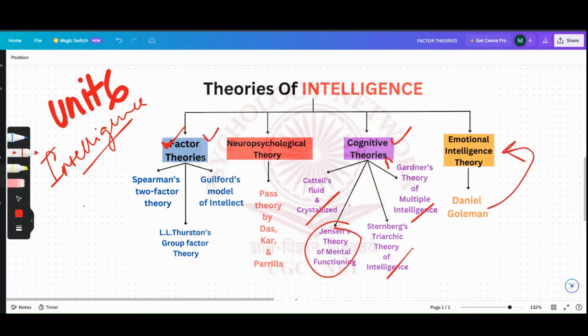Then comes Goleman - Daniel Goleman has given Emotional Intelligence Theory. Now coming to Das, Kar, and Parilla, they have given PASS Theory. PASS Theory belongs to the Neuropsychological Theory of Intelligence. Now let's move on to Thurston's Group Factor Theory.